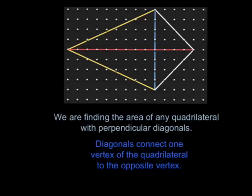I've mentioned these words a few times. I just want to make sure I highlight it. We're trying to find the area of any quadrilateral with perpendicular diagonals. The diagonals connect one vertex of a quadrilateral to the opposite vertex. In this picture, it's the blue diagonal and the red diagonal.